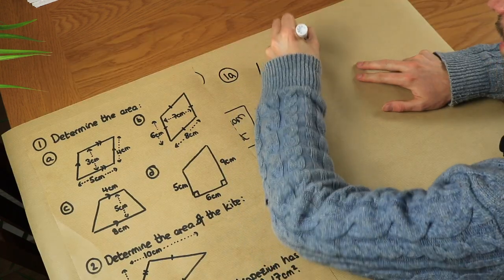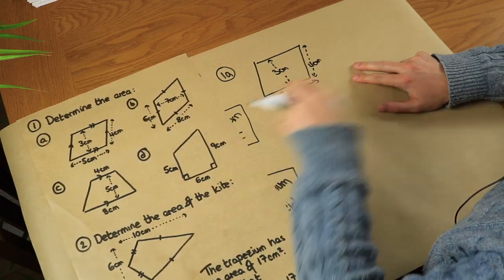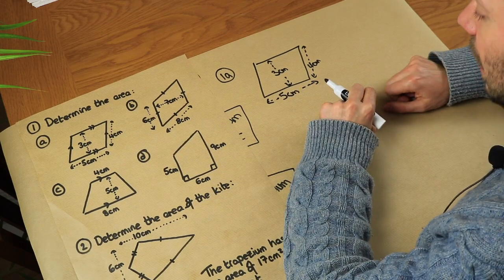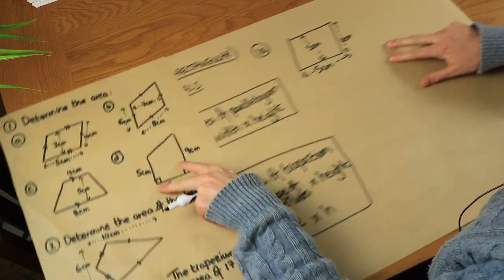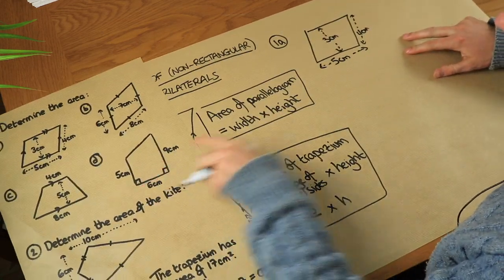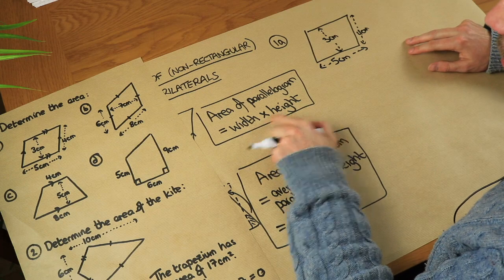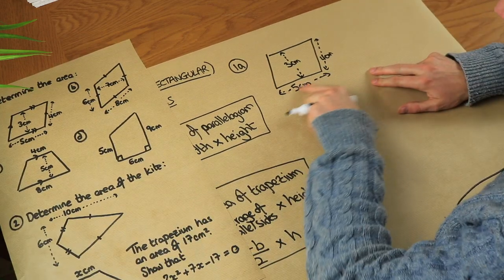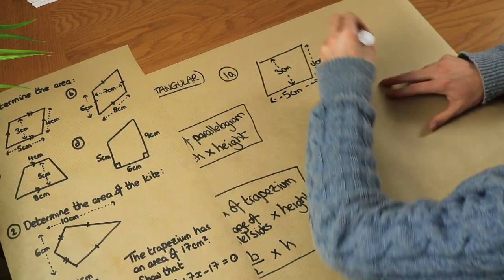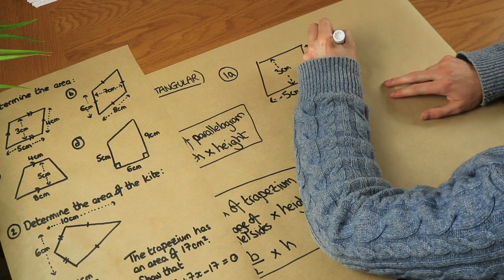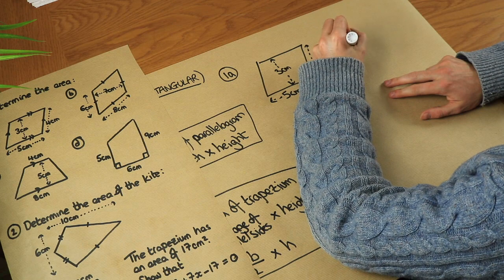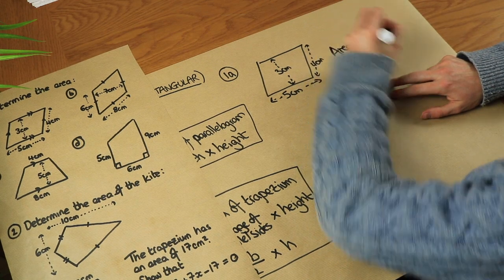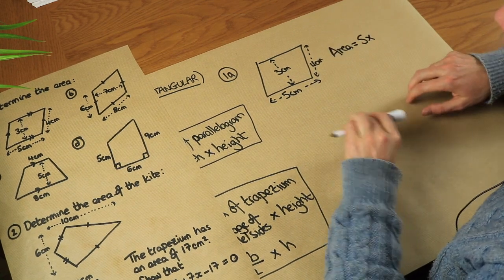We've got this parallelogram here. Now one of the elements in this diagram is a bit of a red herring. We do width times height, so we've got the width of five. The area is five times — well, what is the perpendicular height?